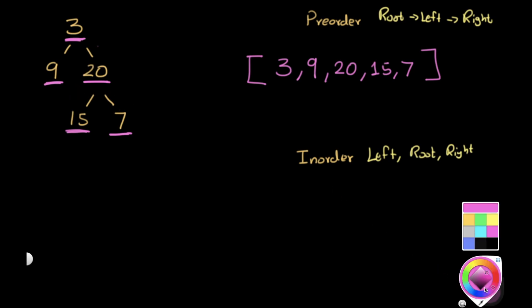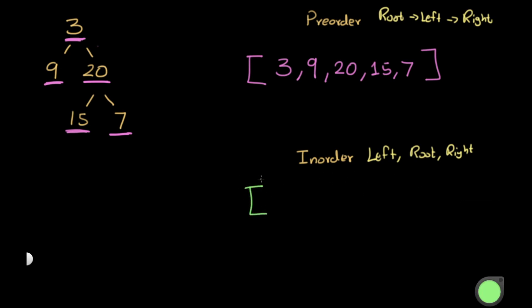Now let's do the in-order traversal. The rules are different: we first go left, then root, then right. Starting at the top node 3, before accounting for 3 we must account for everything to its left, which is 9. At 9, we go left — empty — then we write 9, then go right — also empty. That means we've covered everything to the left of 3, so now we write 3.